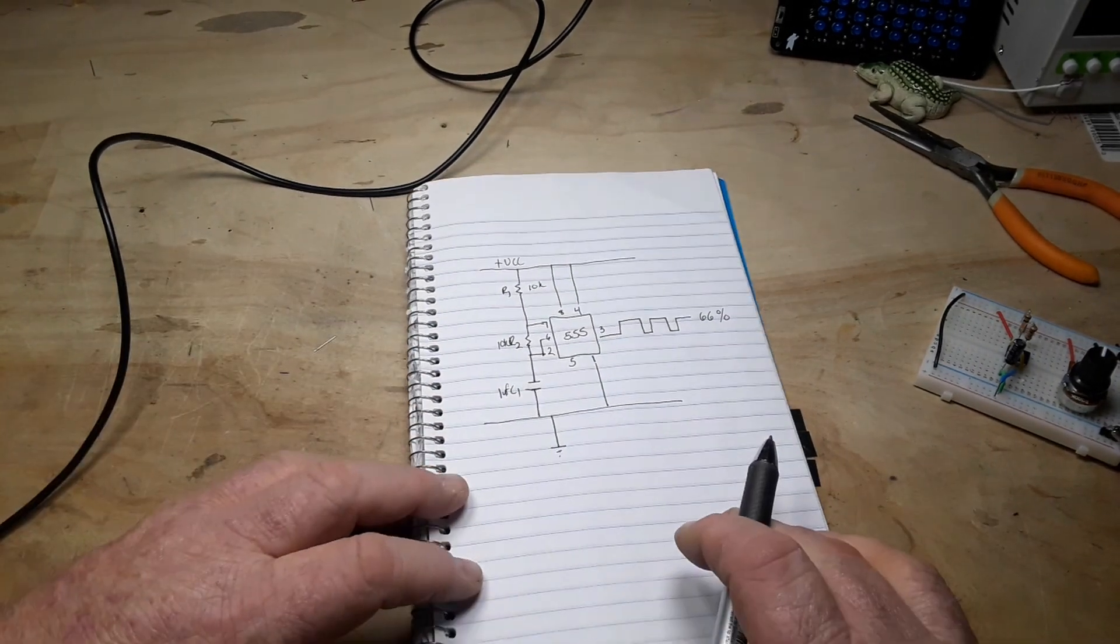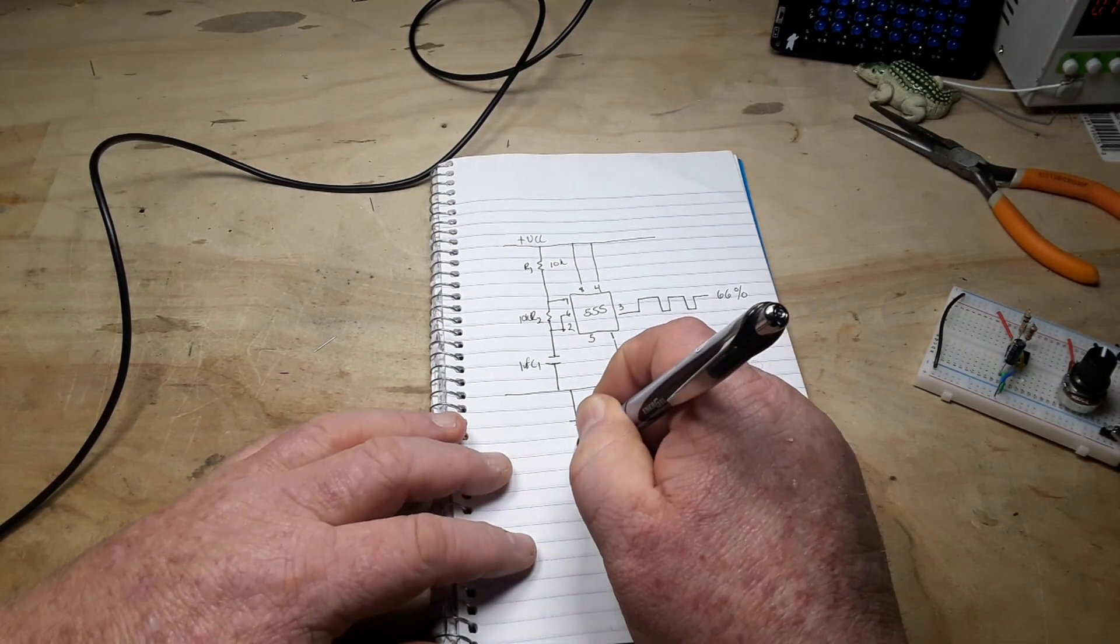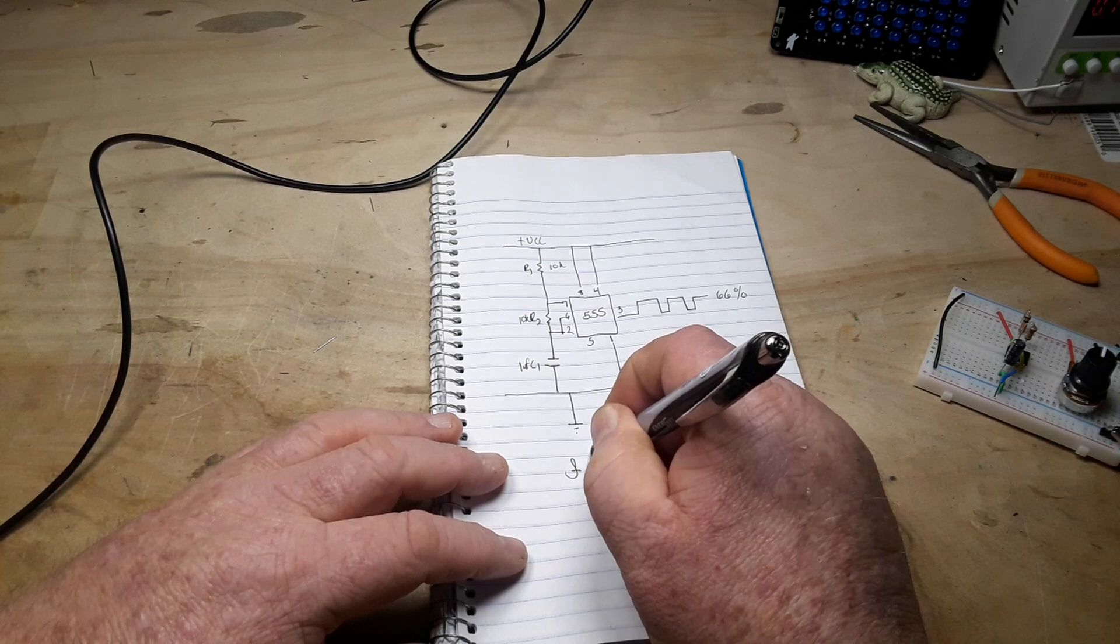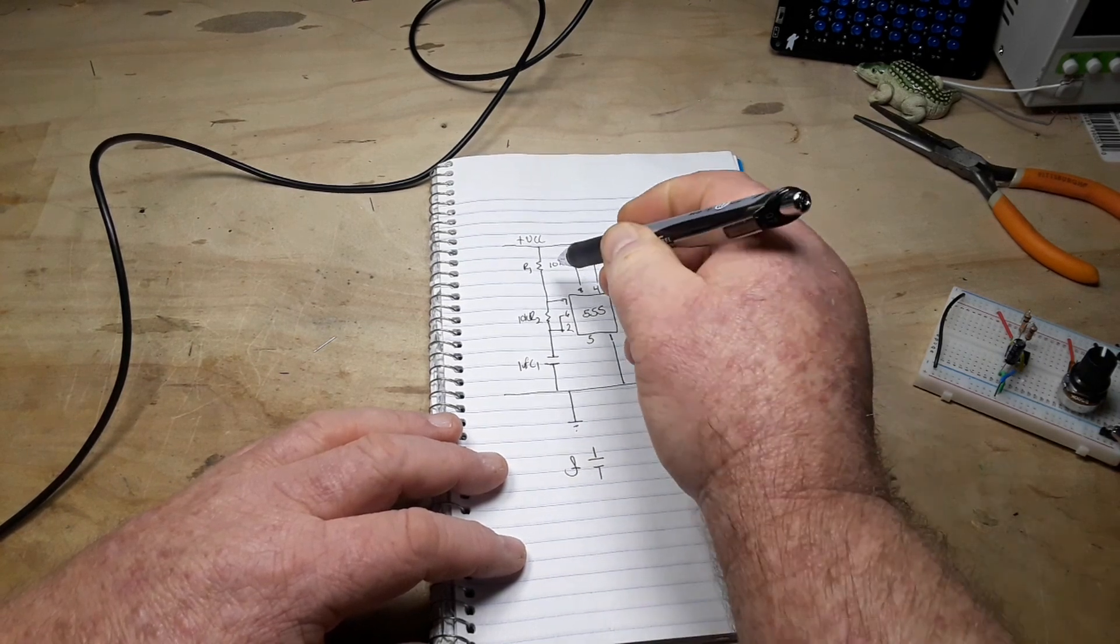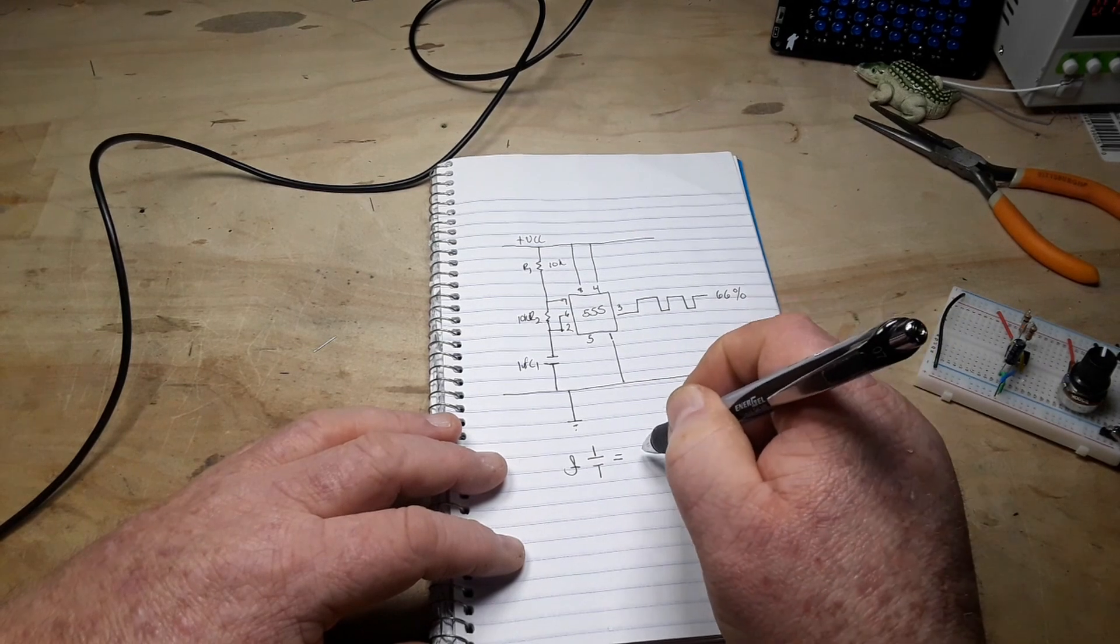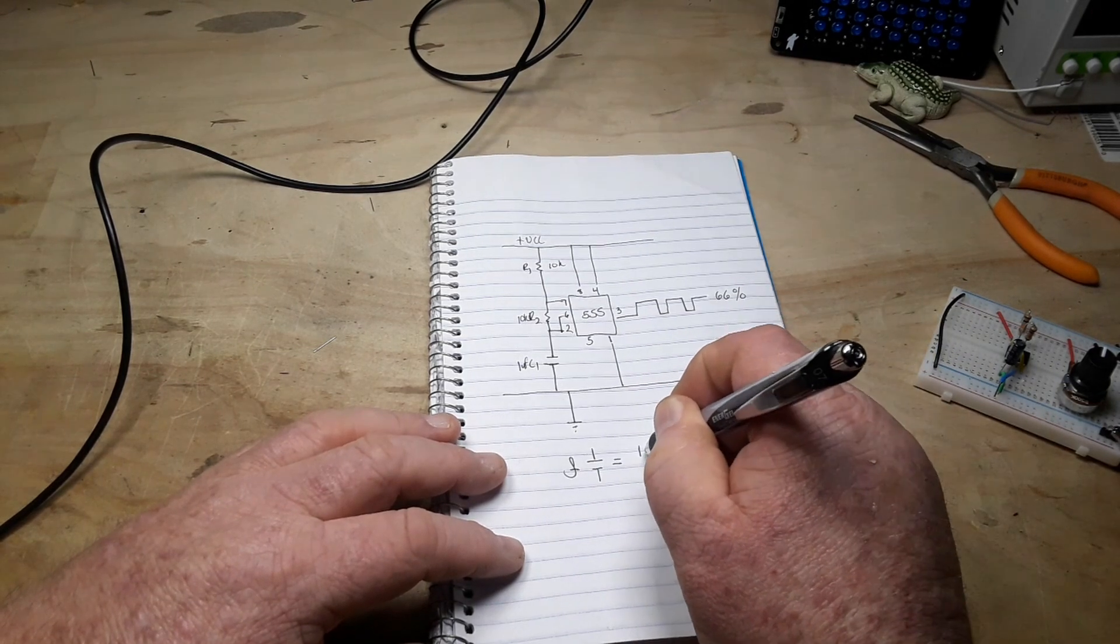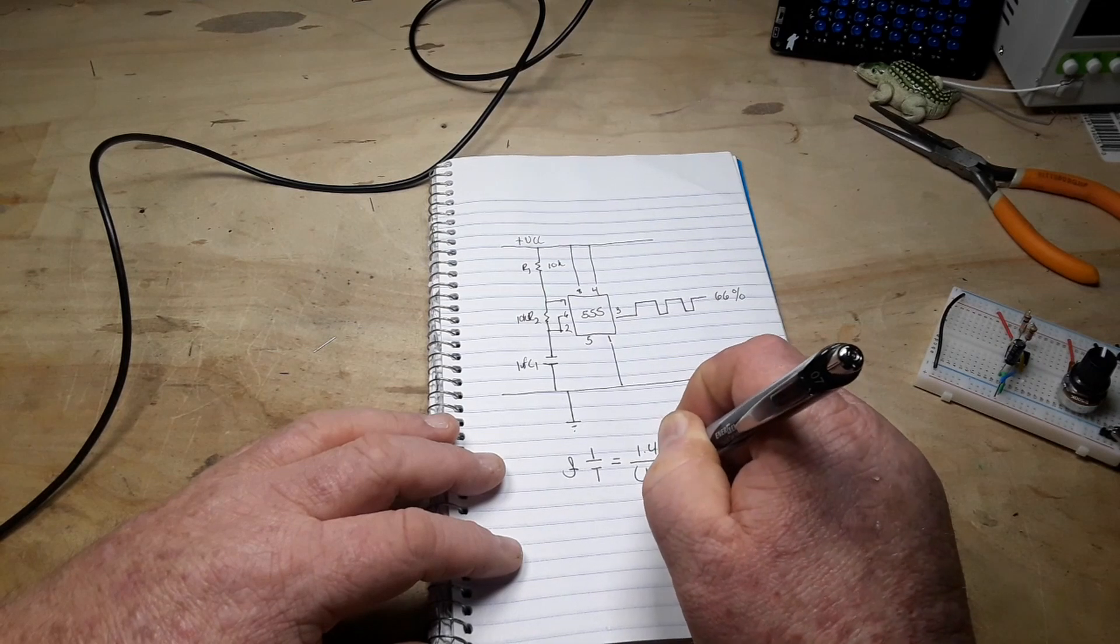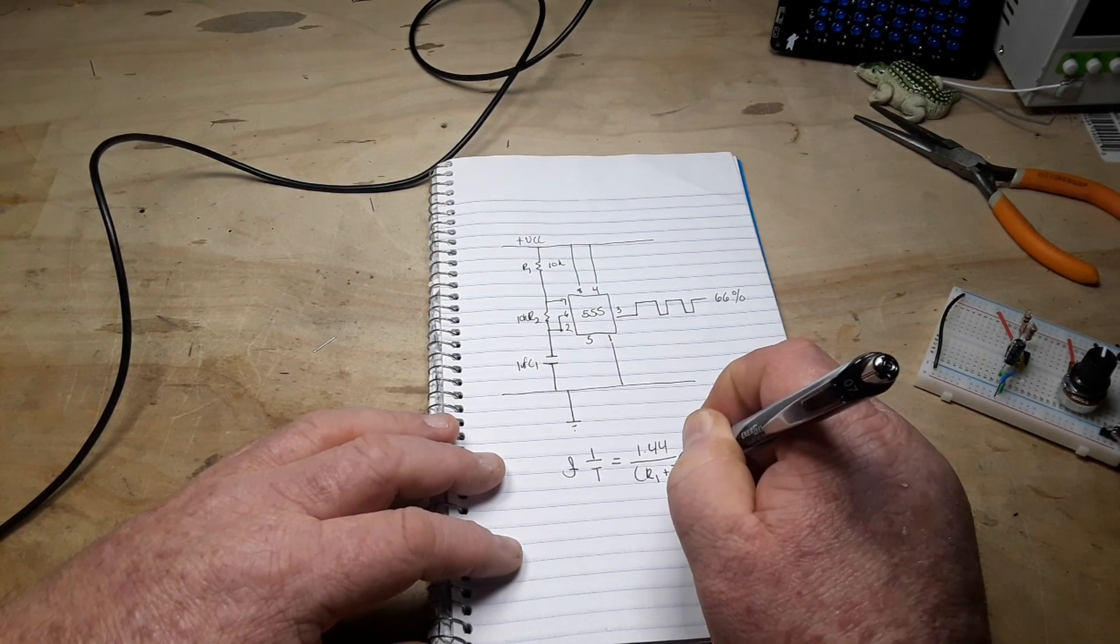And how we get that timing is through this formula. The formula is equal to 1 over the time for that timing. And that timing is equal to 1.44 over R1 plus 2R2 times C.